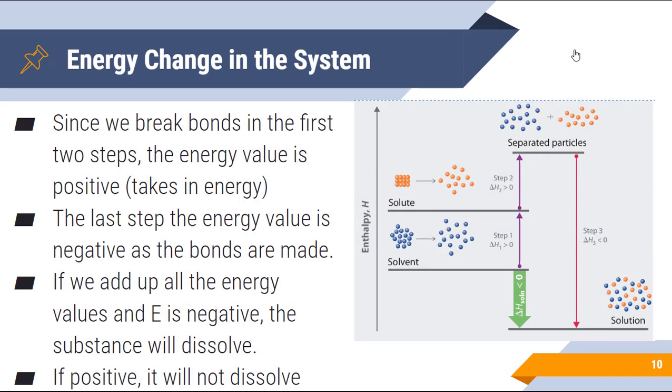So we need to really think about the energy change that is present within the system. Since we break bonds in the first two steps, the energy value is positive. When breaking bonds, the material takes in energy, so the energy goes up. You'll notice that on the chart it says enthalpy. We'll talk a little bit more about how energy and enthalpy are related in a later unit.